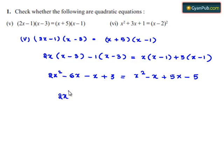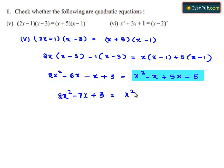So, the left hand side gives 2x² - 6x - x, which becomes 2x² - 7x + 3. The right hand side gives x² - x + 5x - 5, which simplifies to x² + 4x - 5.